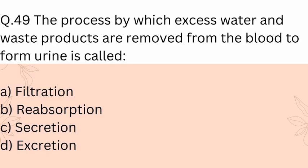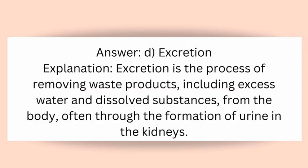Question 49: The process by which excess water and waste products are removed from the blood to form urine is called? A) Filtration, B) Reabsorption, C) Secretion, D) Excretion. Answer: D) Excretion. Explanation: Excretion is the process of removing waste products, including excess water and dissolved substances, from the body, often through the formation of urine in the kidneys.